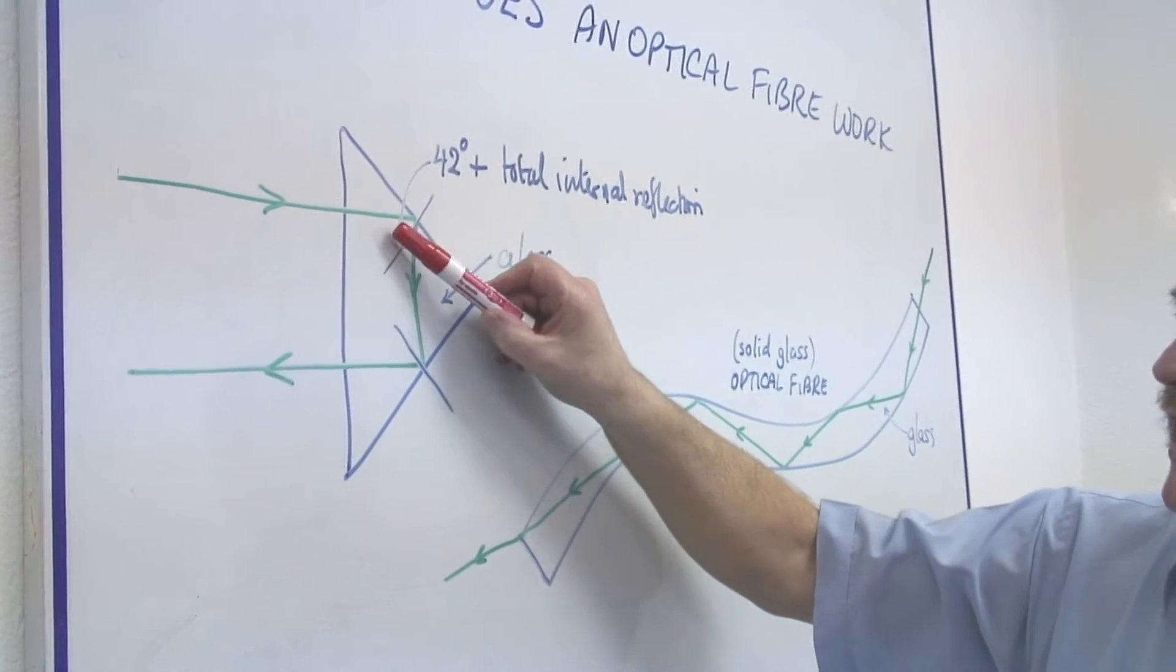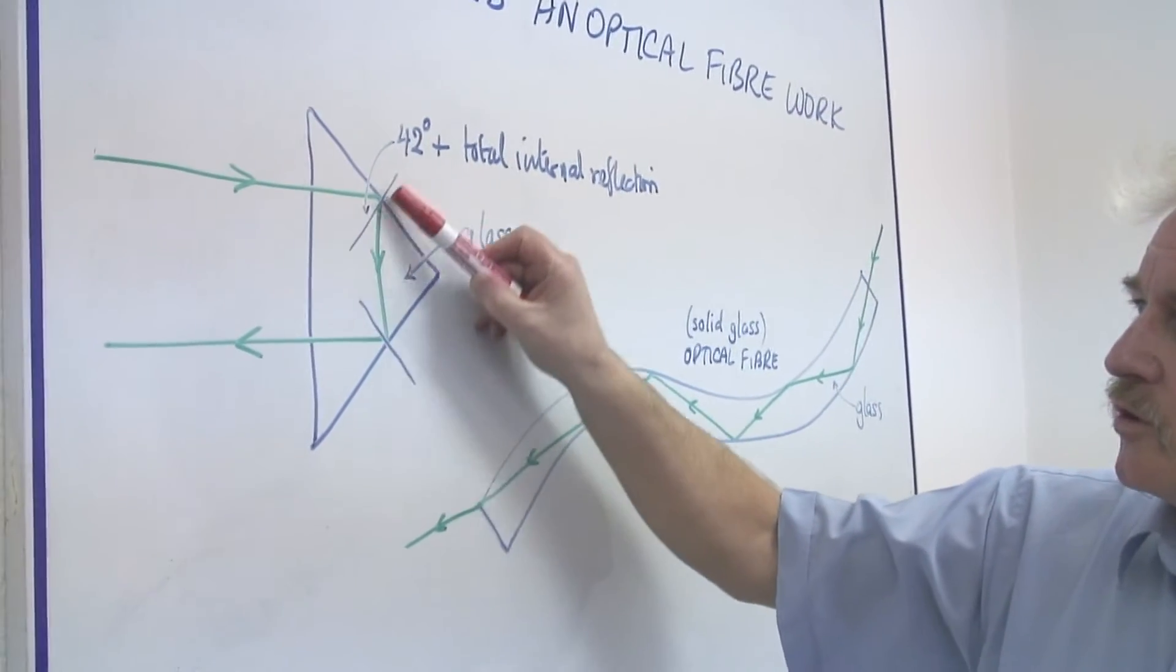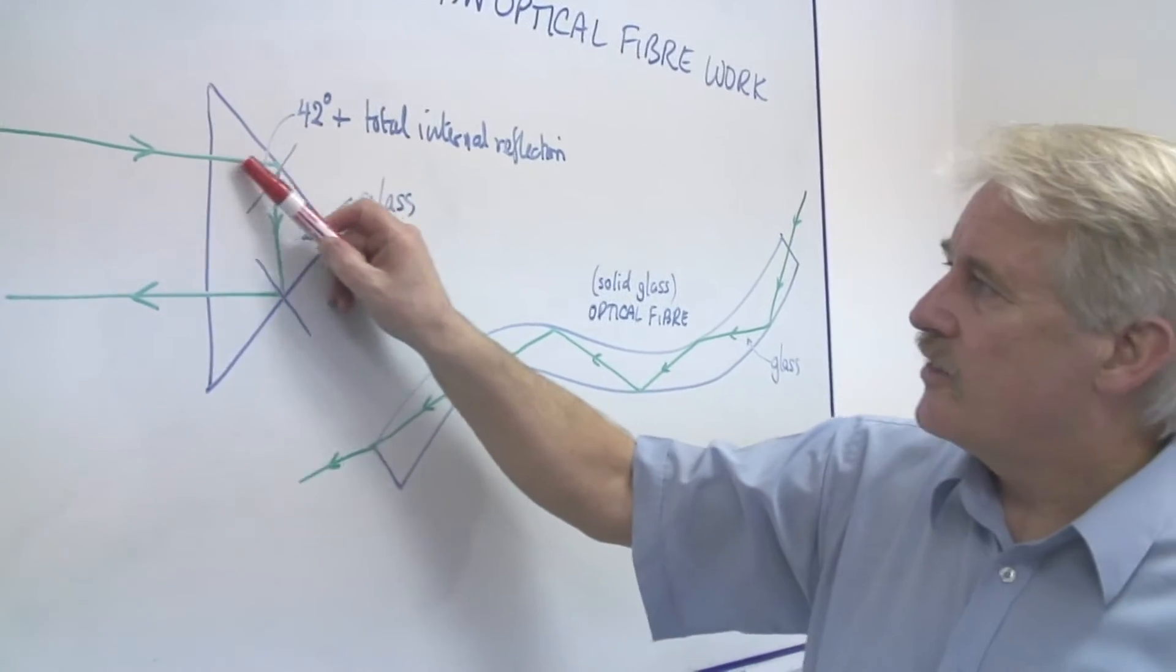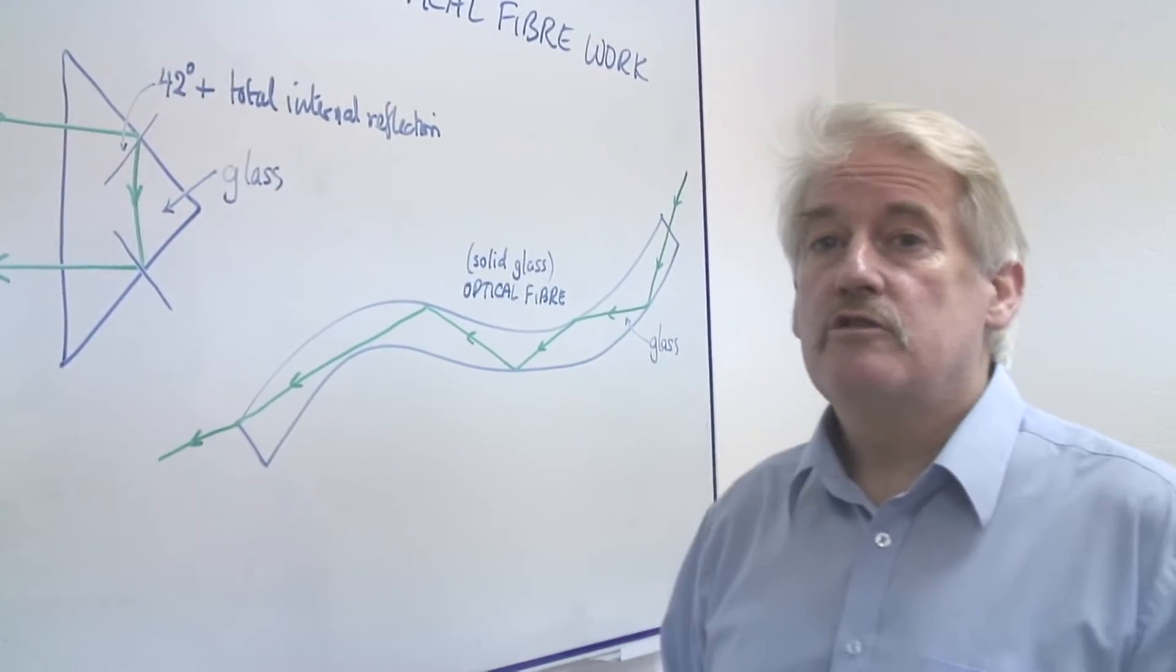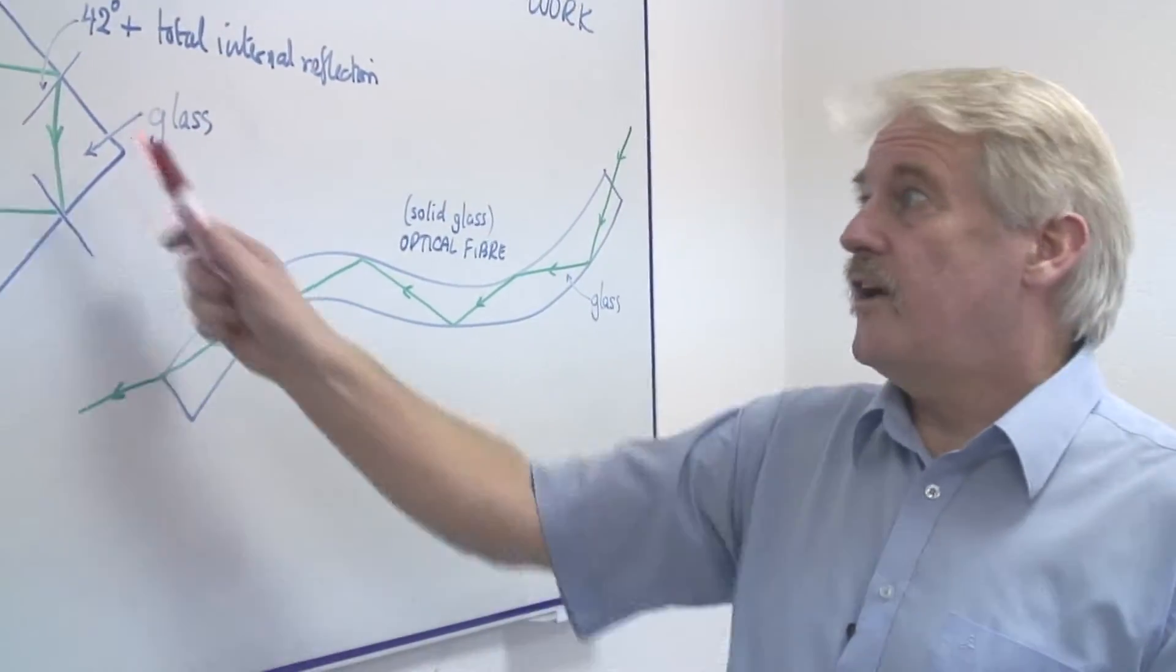It works if the angle here, between what we call the normal, this line, and the ray is more than 42 degrees. Well, 45 degrees here.